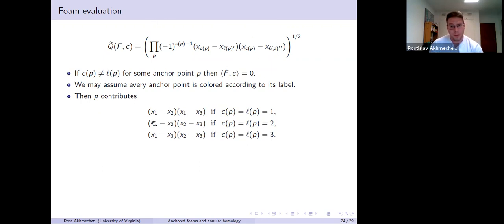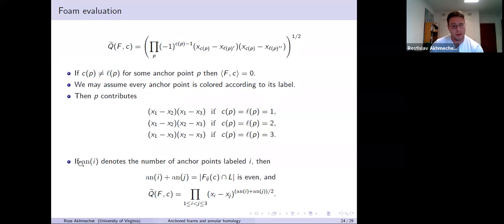On the other hand, otherwise, we just assume that every anchor point is colored according to its label, otherwise the evaluation is zero. And then P contributes under the square root one of three possibilities. If the color equals two and correspondingly the label is one, then under the square root there's no sign because the product of these two terms is X of one minus X of two, X of one minus X of three. Similar for if the color and the label are three. And then if the color equals two in this second row, that's the only kind of time when the sign appears. And it's just there so that the term under the square root is really X of one minus X of two, X of two minus X of three, and not in a different order like X of two minus X of one.